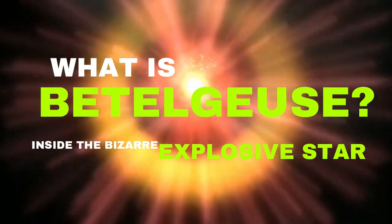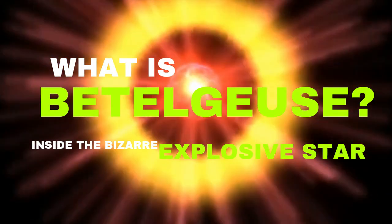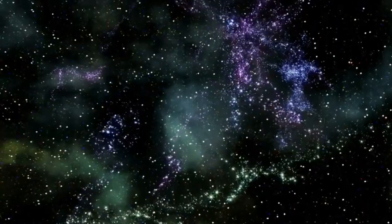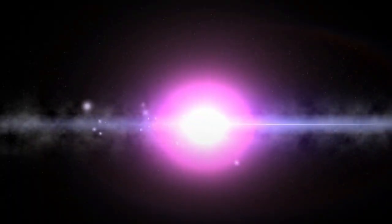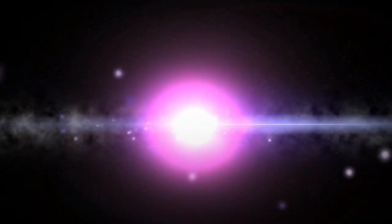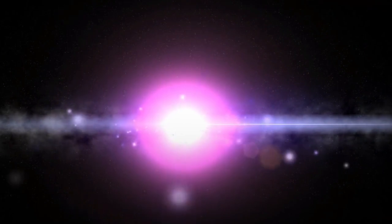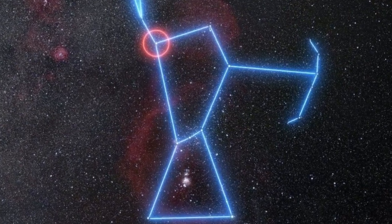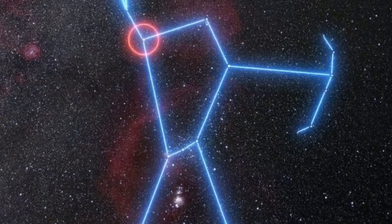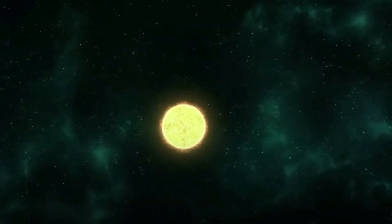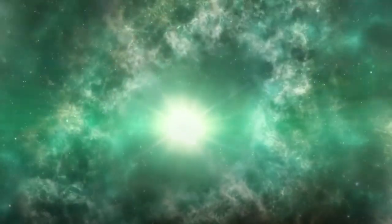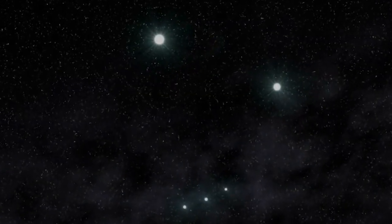What is Betelgeuse? Betelgeuse has been a star that has captured humanity's awe and attention for centuries. Its blazing red supergiant shines brilliantly in the night sky, making it an unparalleled spectacle. As the right shoulder in the constellation Orion, or left shoulder as seen from Earth, Betelgeuse, or Alpha Orionis, is one of the most prominent stars ever discovered and one of the brightest stars in the night sky.